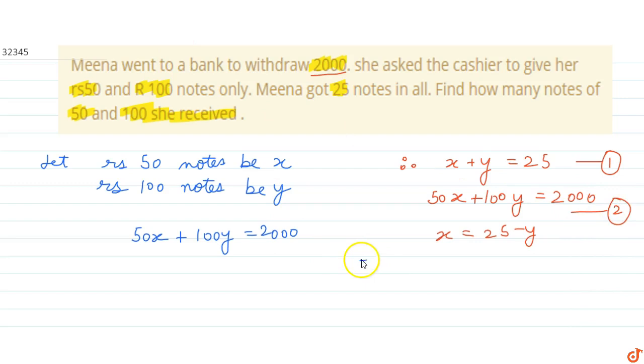Simplifying this equation, we get 1250 plus 50Y equals 2000. This implies that 50Y equals 750, so Y equals 15.